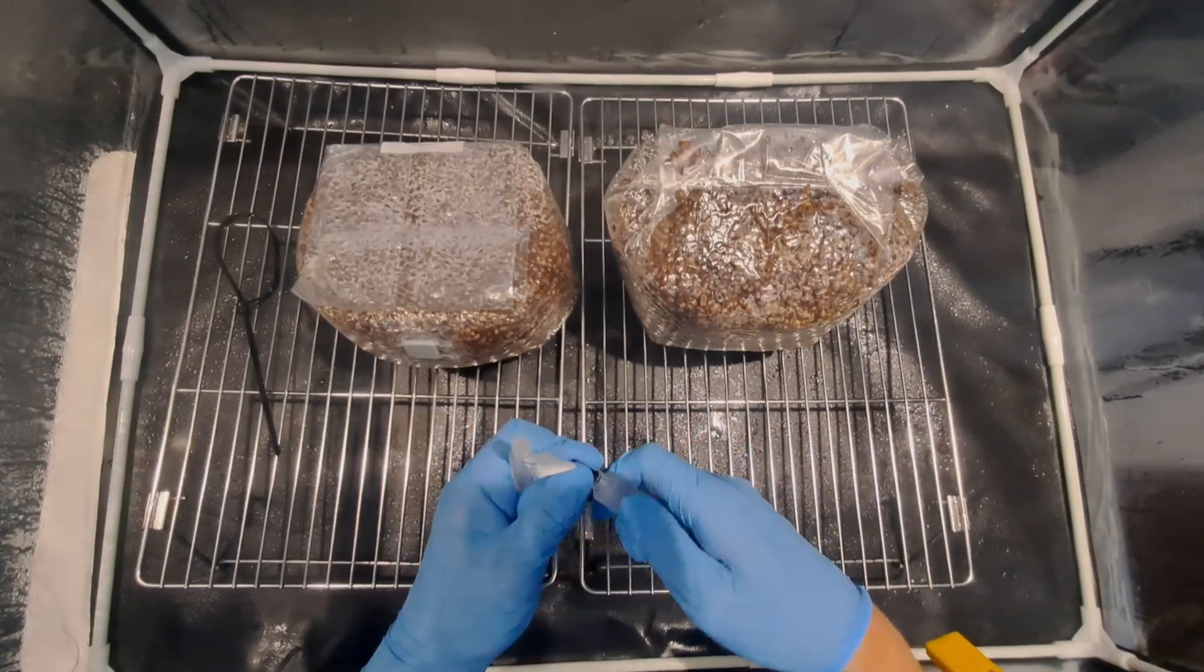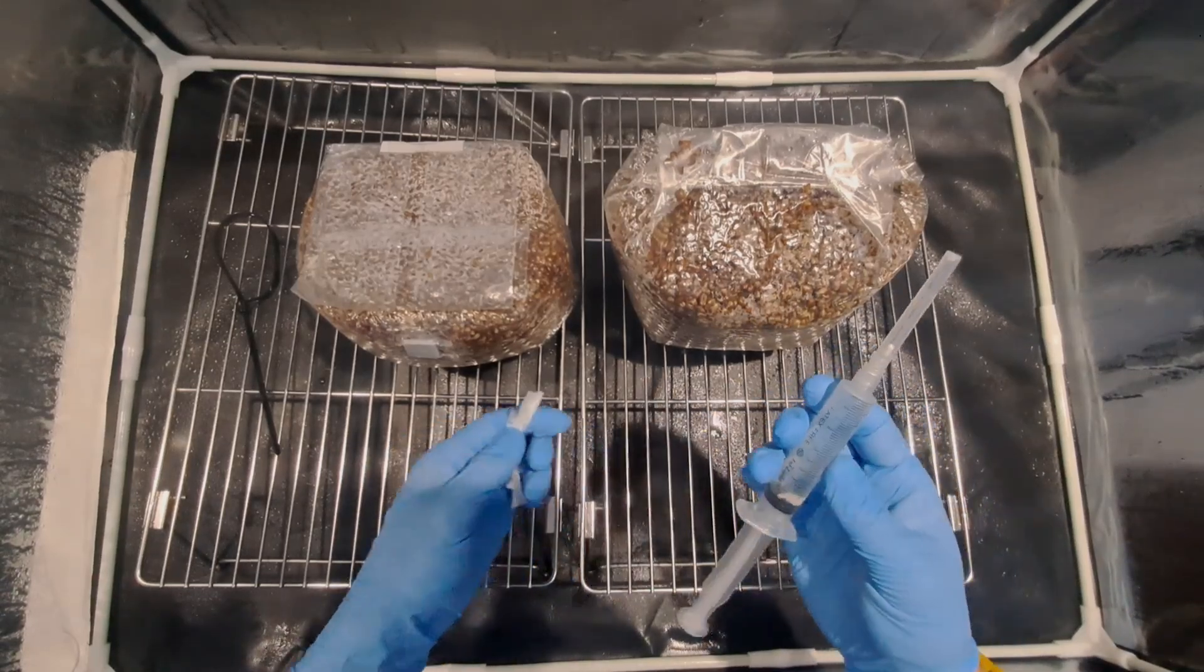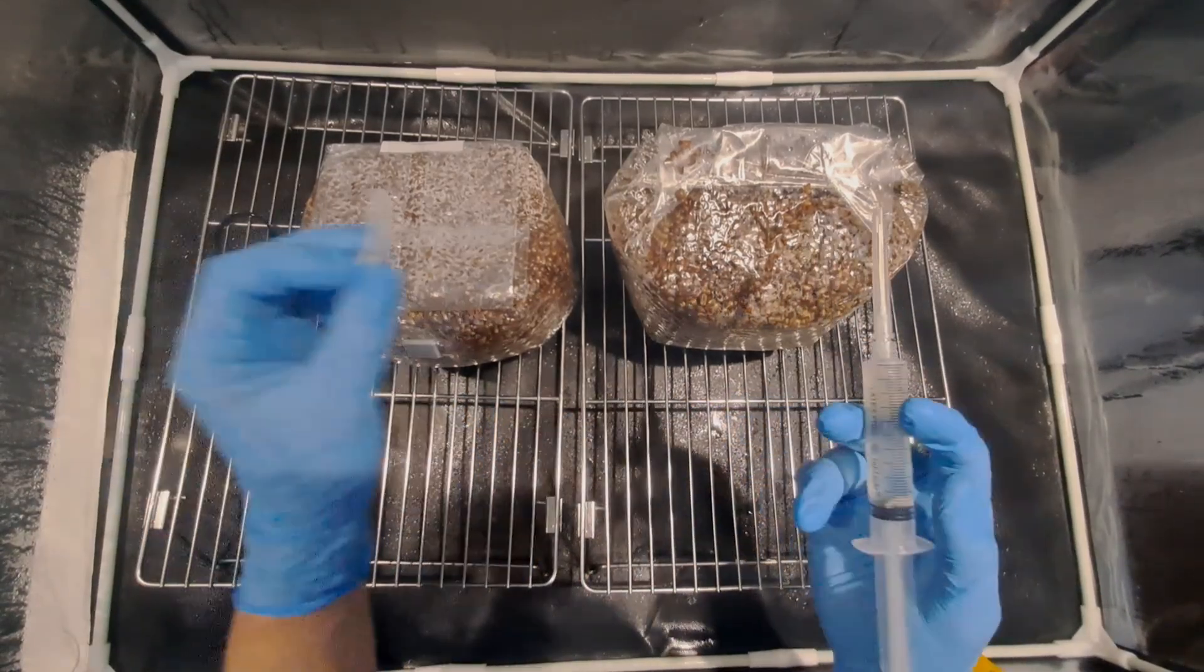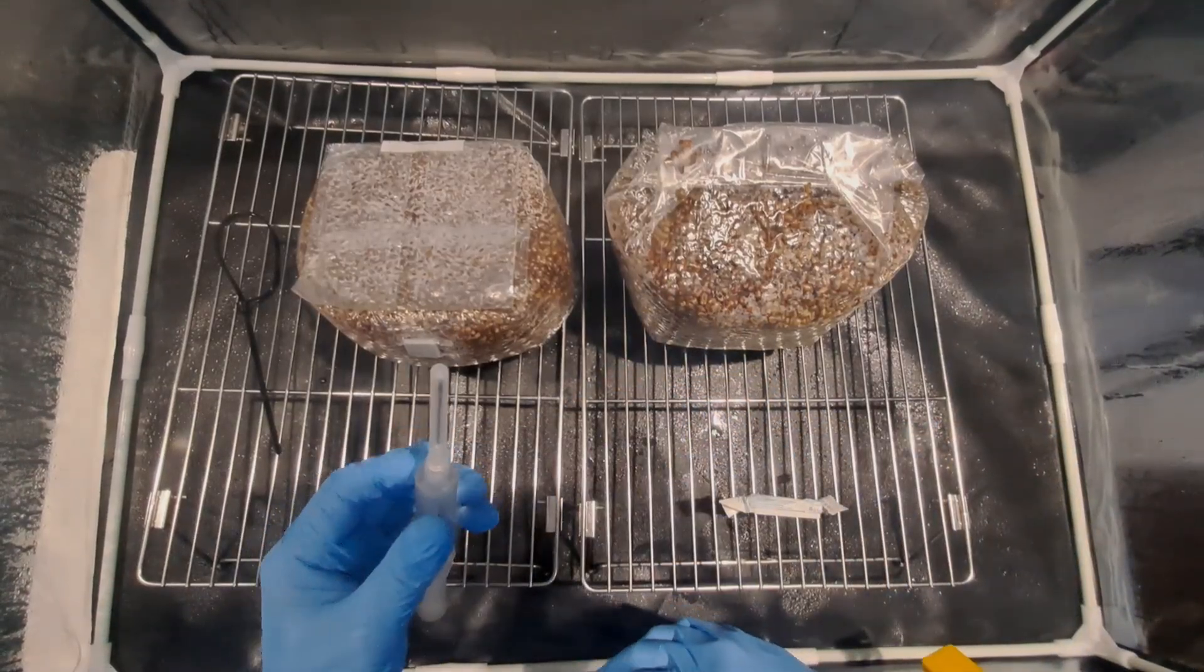When I'm ready to do the inoculation I quickly remove the luer lock, remove the needle from the sterile packaging and assemble the syringe. I then inoculate straight through the injection port into the center of the grain.